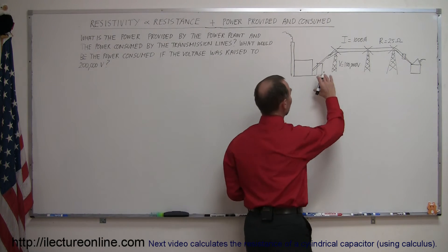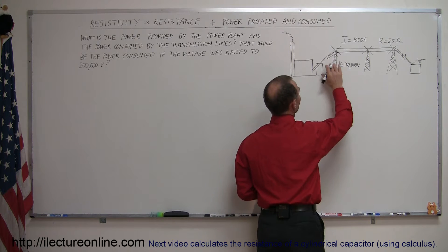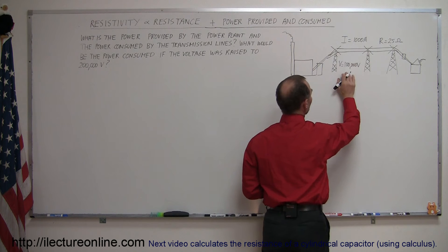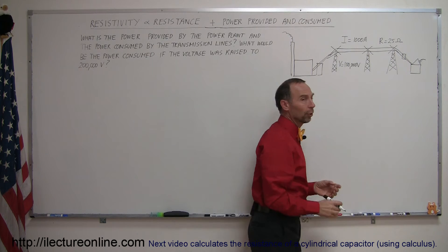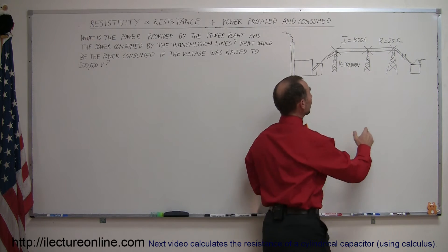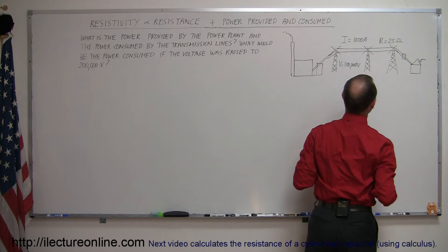Assuming that they raise through a transformer the voltage across the lines to a hundred thousand volts, and that there's a thousand amps of current flowing through the wires, and that the resistance of the wires is 25 ohms.